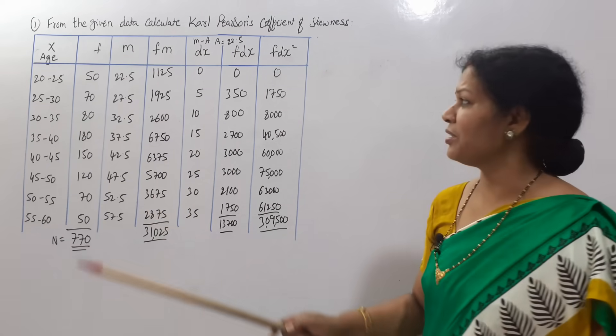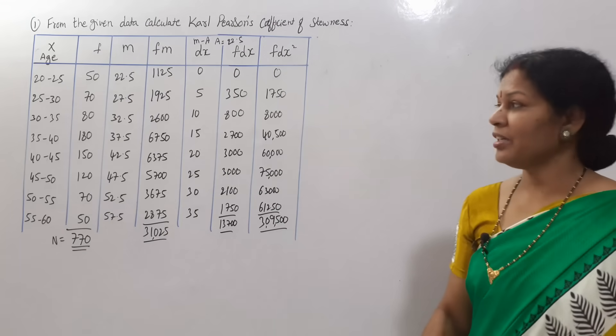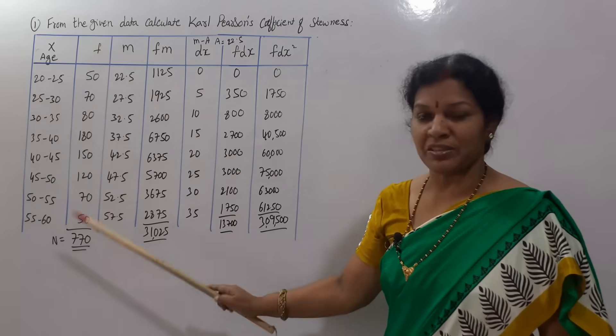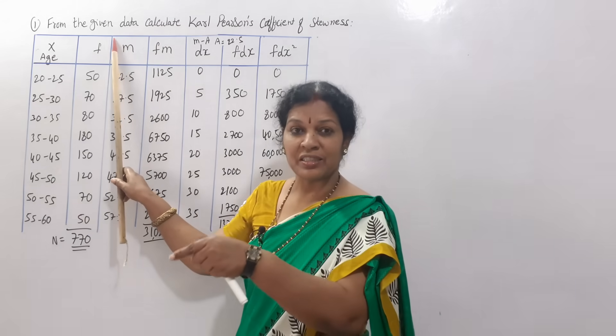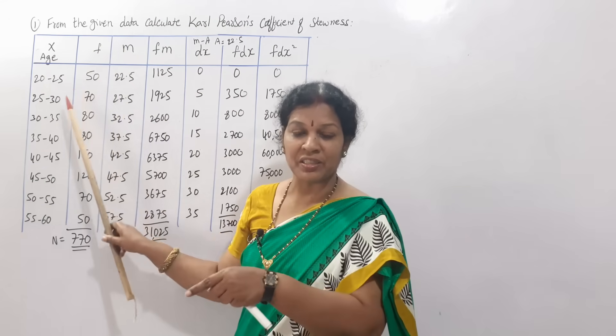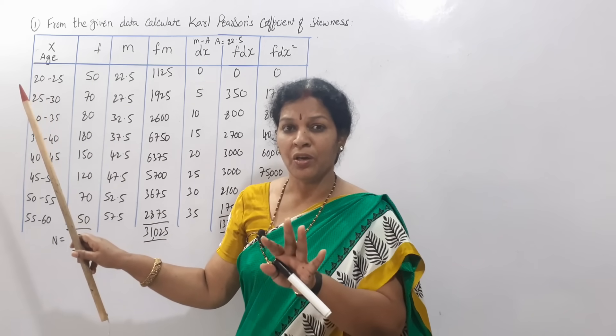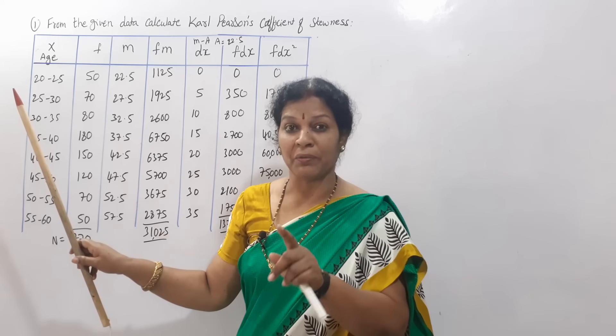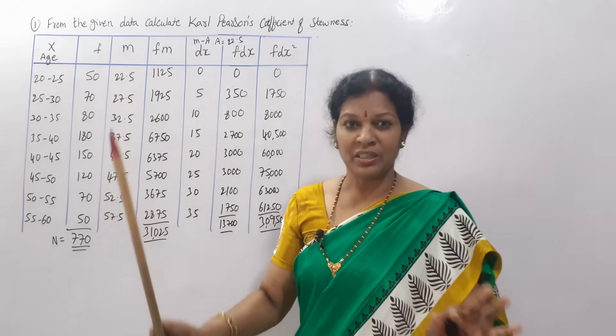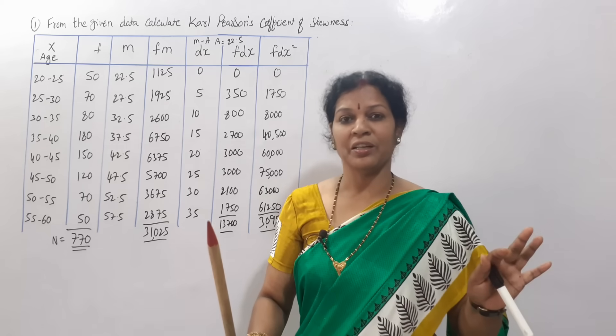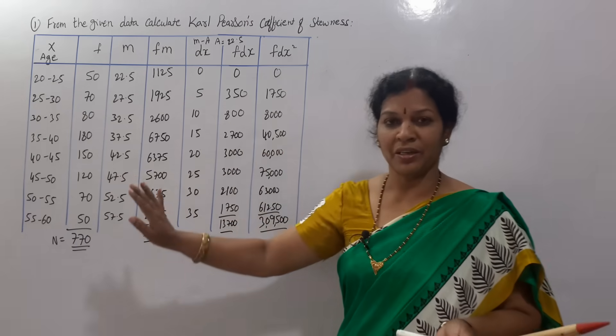See the problem first. From the given data, calculate Karl Pearson's coefficient of skewness. Data given is x in class intervals and frequency. Everything I have calculated now. These calculations I have done to save our time and give you a quick recap.